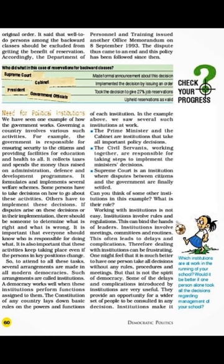The constitution of any country lays down the basic rules on the powers and functions of each institution. In the example we have seen, several institutions are involved — the Prime Minister and the Cabinet are the institutions that take all important policy decisions. Civil servants working with these ministers are responsible for taking steps to implement the ministers' decisions.